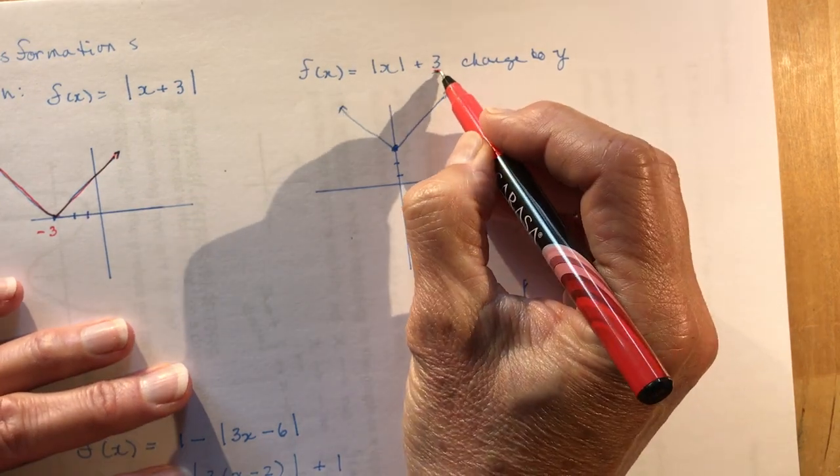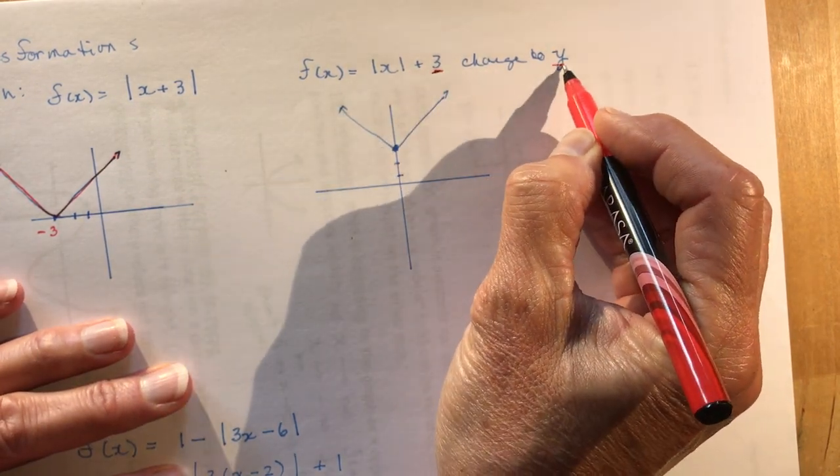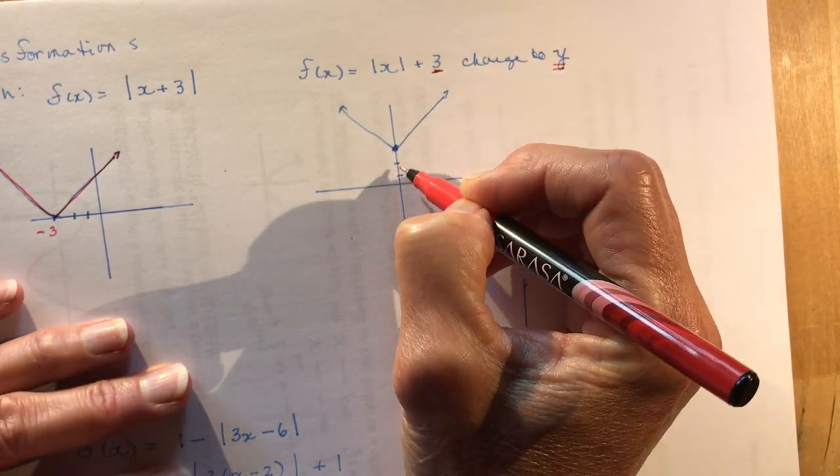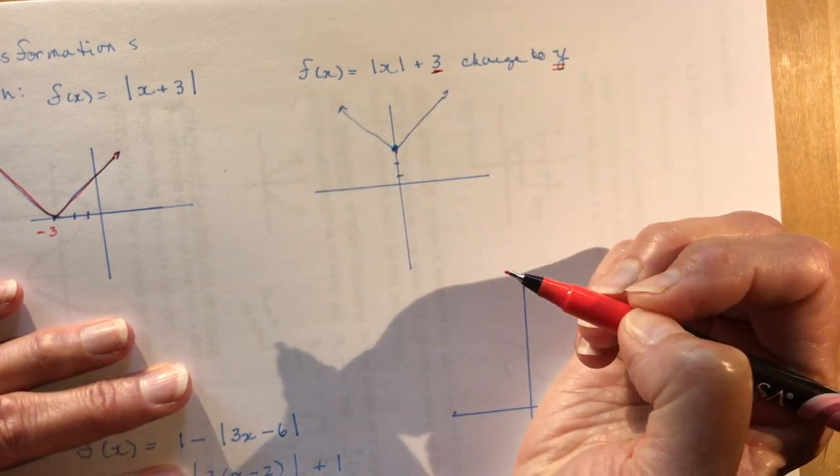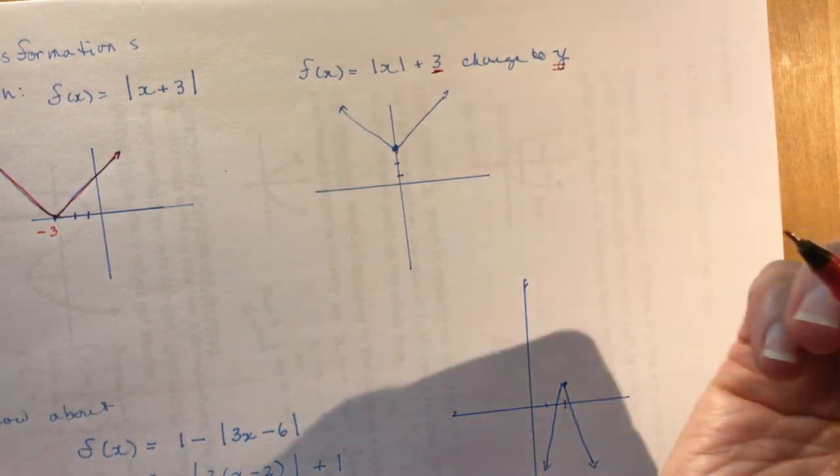This one where the three is out here, that is a change to y. So you're going up three units and then you just draw your graph again. It's pretty easy, isn't it?